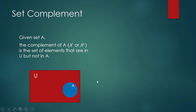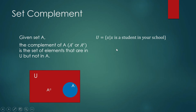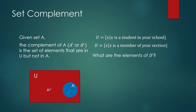For example, this red rectangle is our universal set and this blue circle represents set A. Everything that is outside A but inside the universal set is the complement of A. Let U equal the set of all students in your school — the student population. Let D equal the set of students in your section. Then the complement of D is everybody in the school who is not a member of your section.